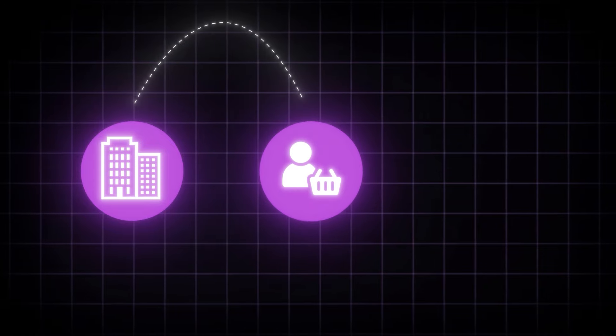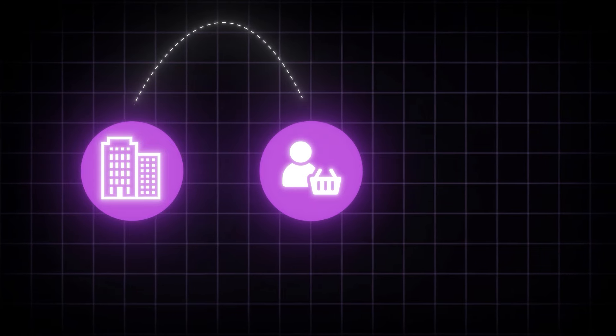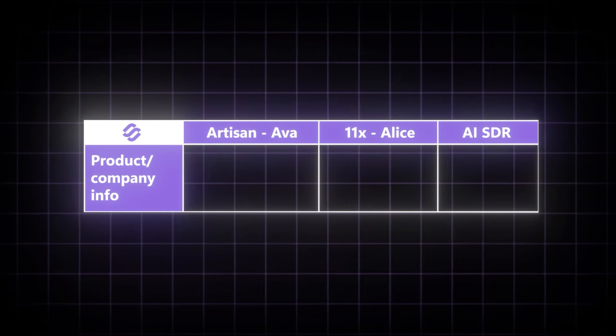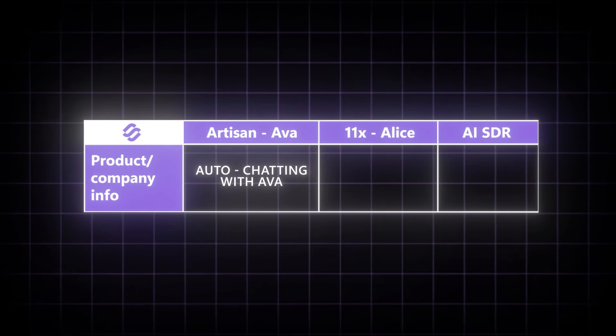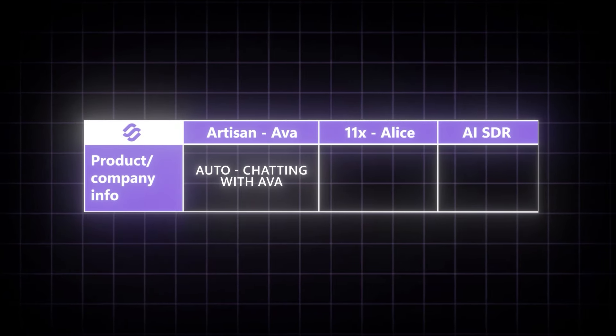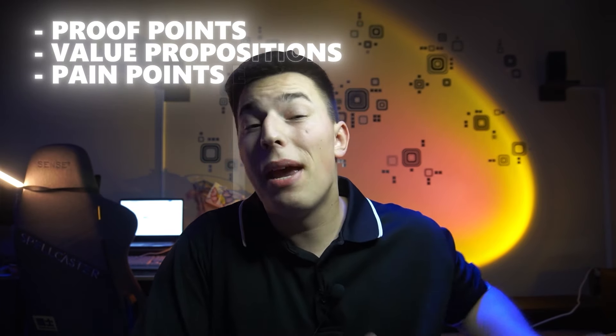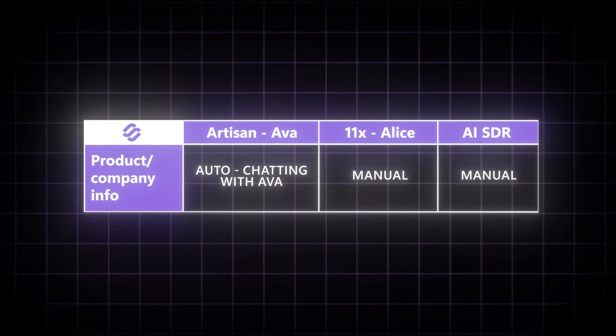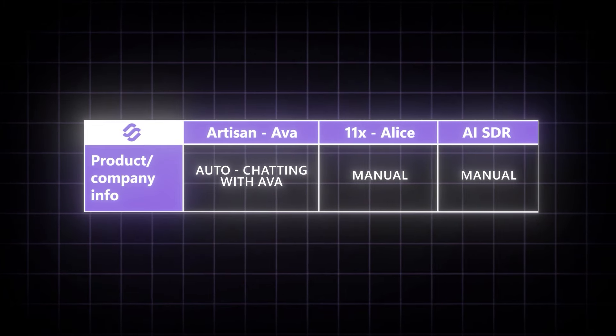First, the setup. Setup includes three parts: product and company information setup, ideal customer's profile setup, and the campaign setup. You first begin with product and company setup, where Ava from Artisans will help you set it up semi-automatically by asking you questions. She'll then format all of the answers you provided into proof points, value propositions, pain points, and more. For 11X's Alice and AI SDR, all of this setup is manual.